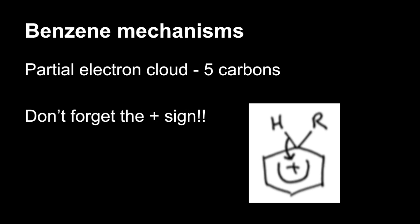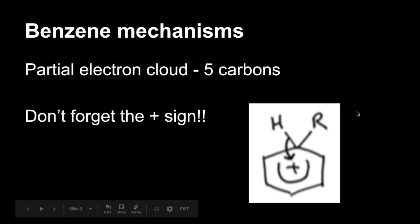Benzene mechanisms, just remember that partial electron cloud in the intermediate, you need to cover five carbons with that, and don't forget the plus sign in the middle. So five carbons covered, plus sign in the middle. And there's that curly arrow, the pair of electrons from the bond.